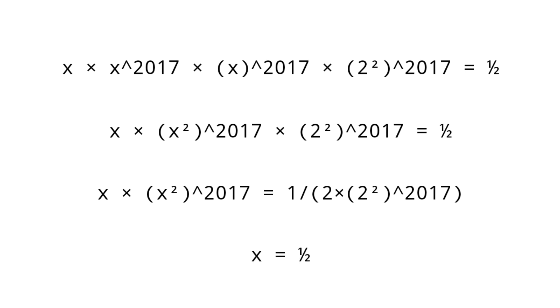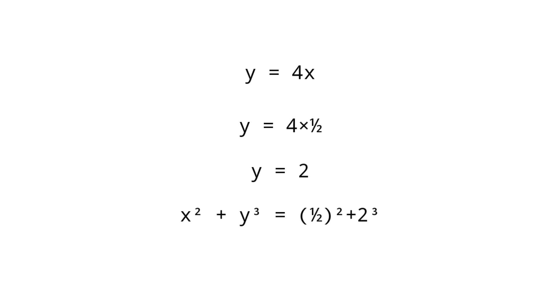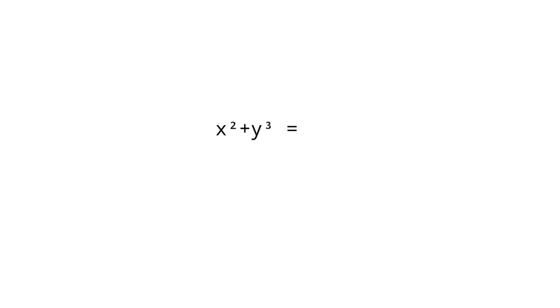Substituting x equals 1/2 in y equals 4x, we get y equals 4 into 1/2, so y equals 2. Therefore, x squared plus y cubed equals (1/2) squared plus 2 cubed, which equals 1 by 4 plus 8, giving x squared plus y cubed equals 33 by 4.